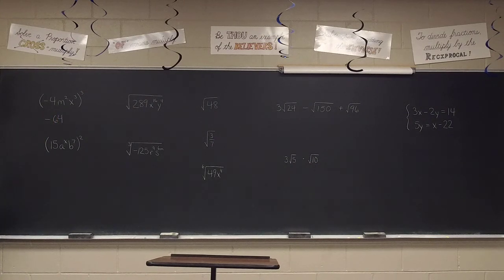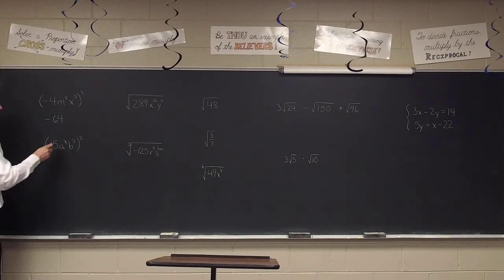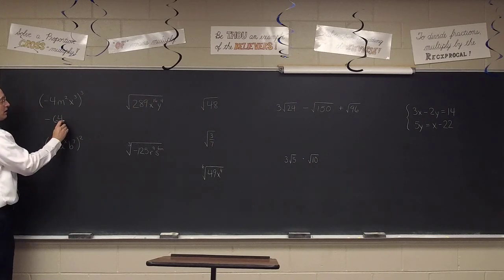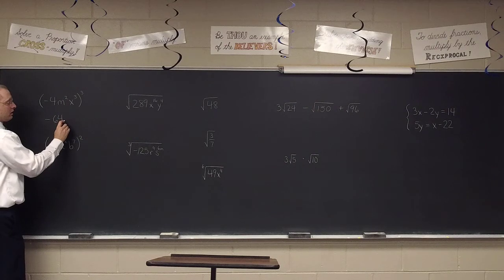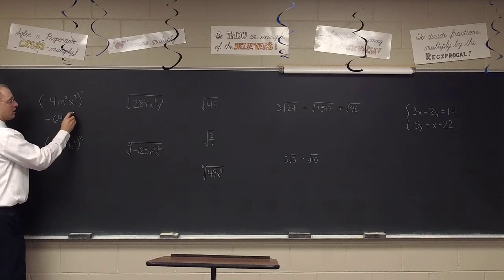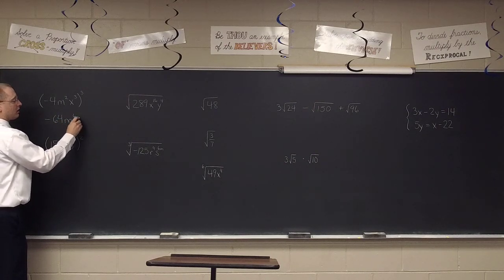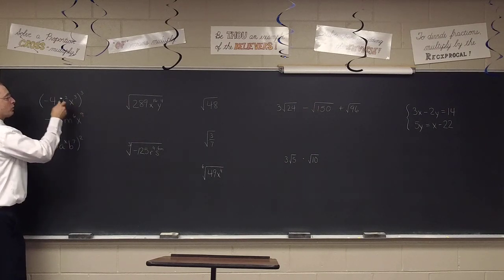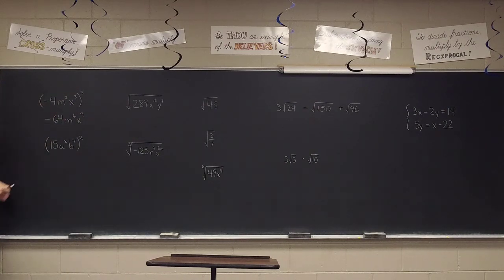What do I get when I finish out the problem? Because we're multiplying the exponents. What about on this next one? A 15a to the x, b to the 7, we're squaring it.